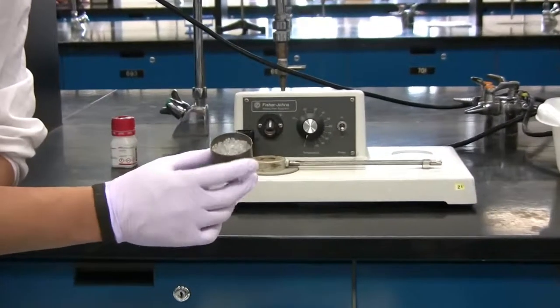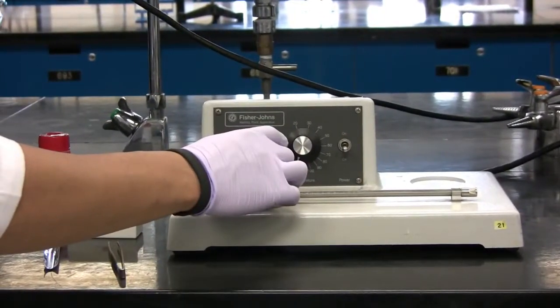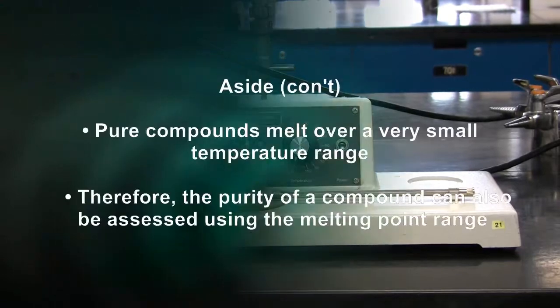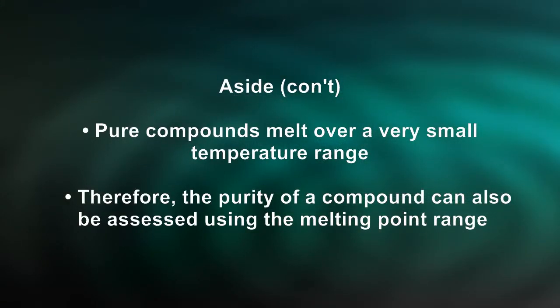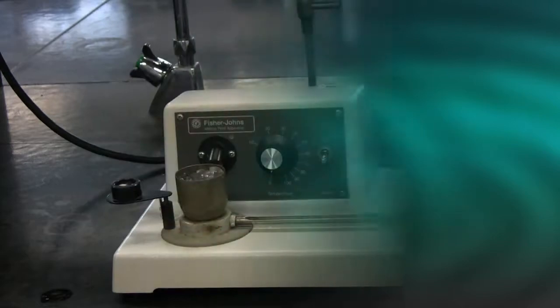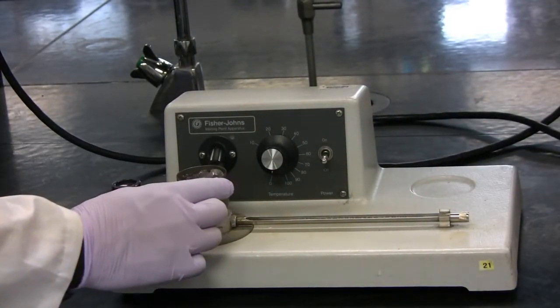Now take your crucible of ice and place it on the heating element and allow to cool. Once cooled, remove the crucible of ice.